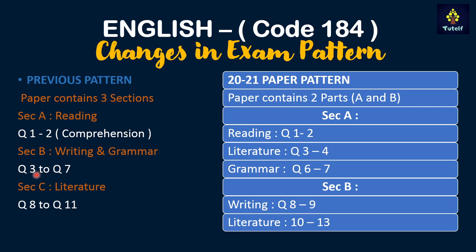In Section B there were questions 3 to 7 related to writing and grammar. In Section C there was literature based on the books of course, from question 8 to question 11.